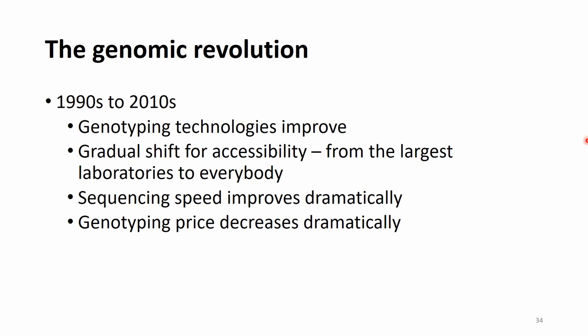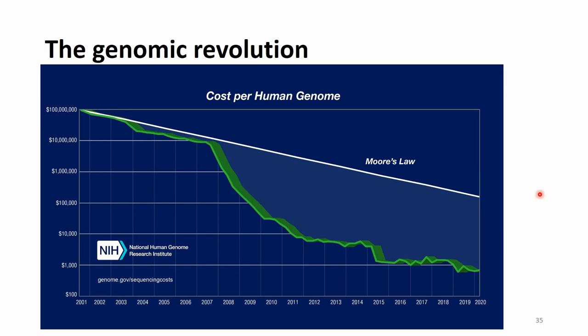Here is a slide on the decrease in price using the human genome as an example. The x-axis starts in 2001 and ends in 2020 — basically the last 20 years. The price on the y-axis is on a non-linear scale, starting at $100 million and decreasing dramatically. The situation in 2001 was that a single human genome cost $100 million to sequence — very far from affordability.